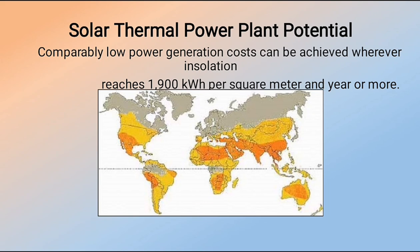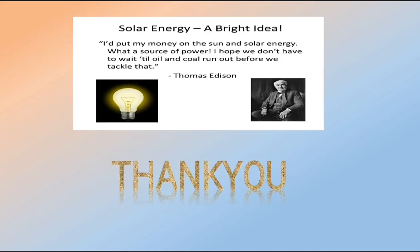Geographically, areas close to the equator have higher solar radiation potential. Use of photovoltaic tracking can increase solar potential in areas farther from the equator, and low power generation cost can be achieved where insolation reaches up to 900 kilowatts per square meter or more. The map shows orange-shaded areas with more solar thermal power plant potential than yellowish areas. Solar energy is a truly renewable form of energy that can never run out, and energy can be transferred from one form to another through various processes.